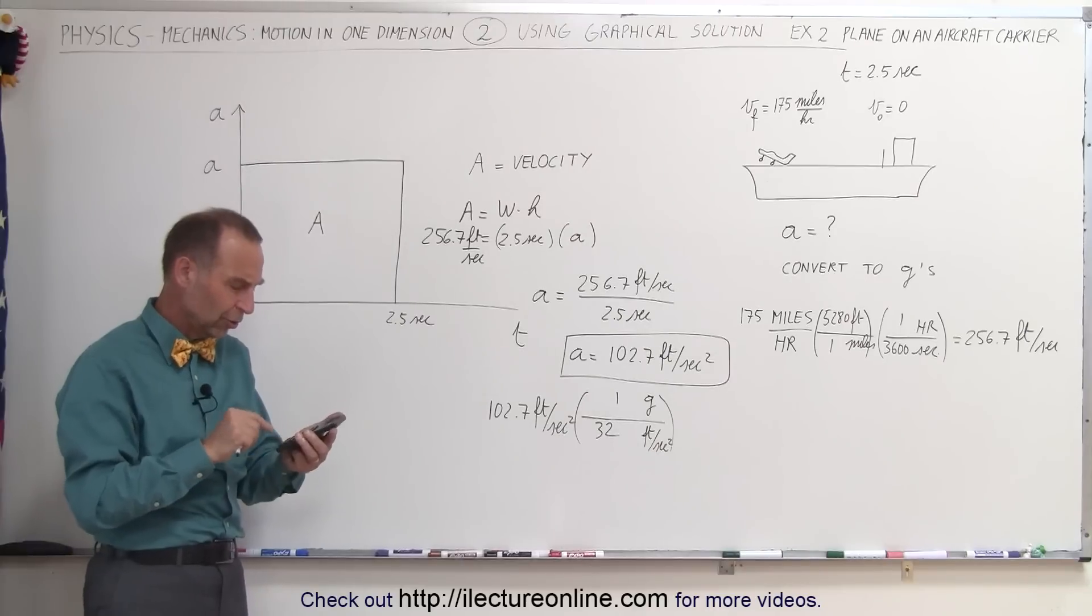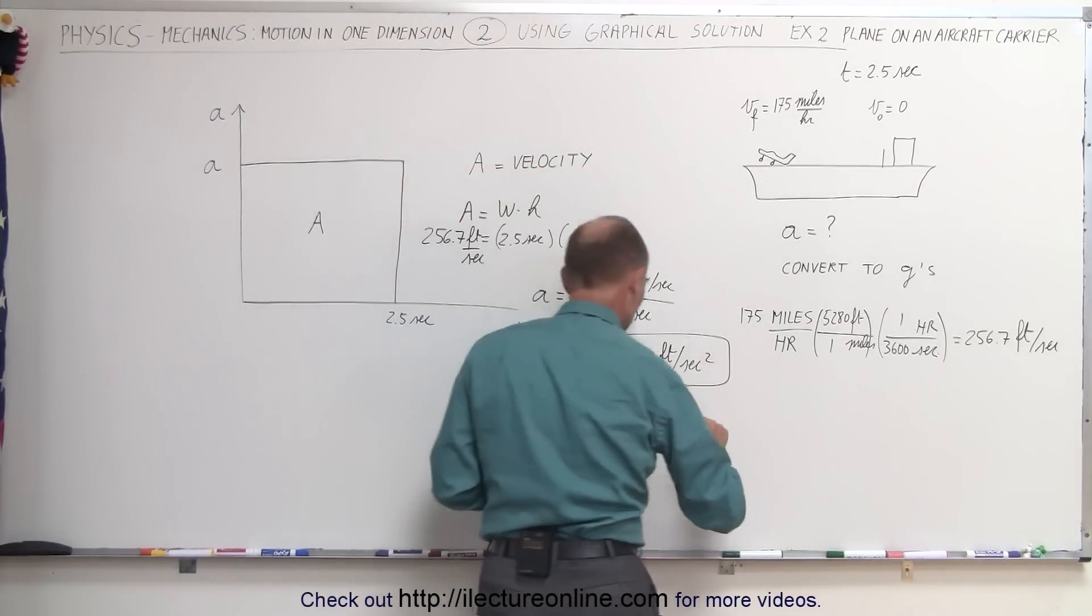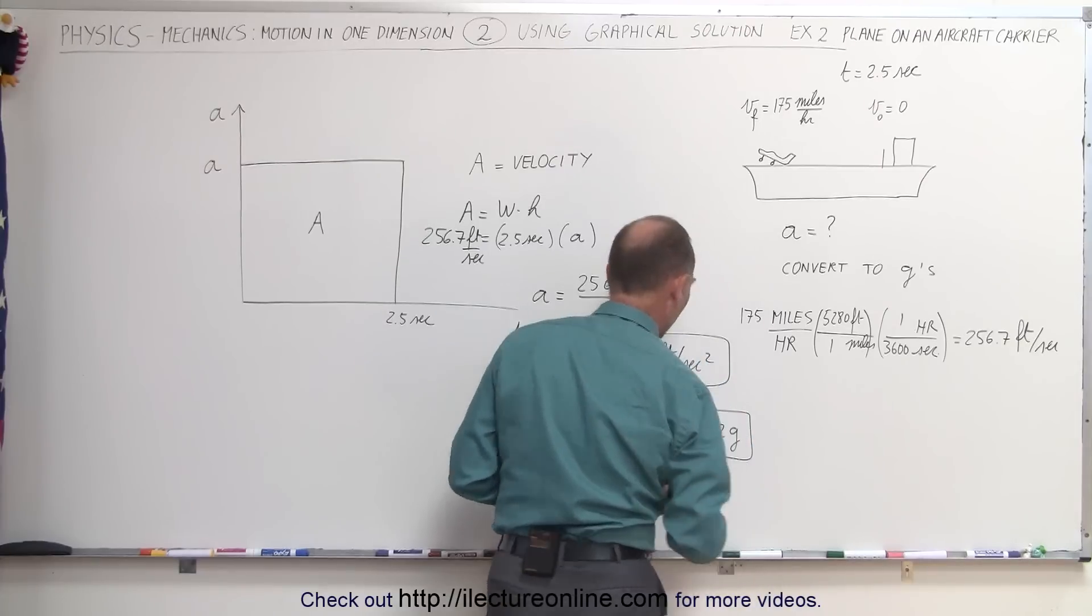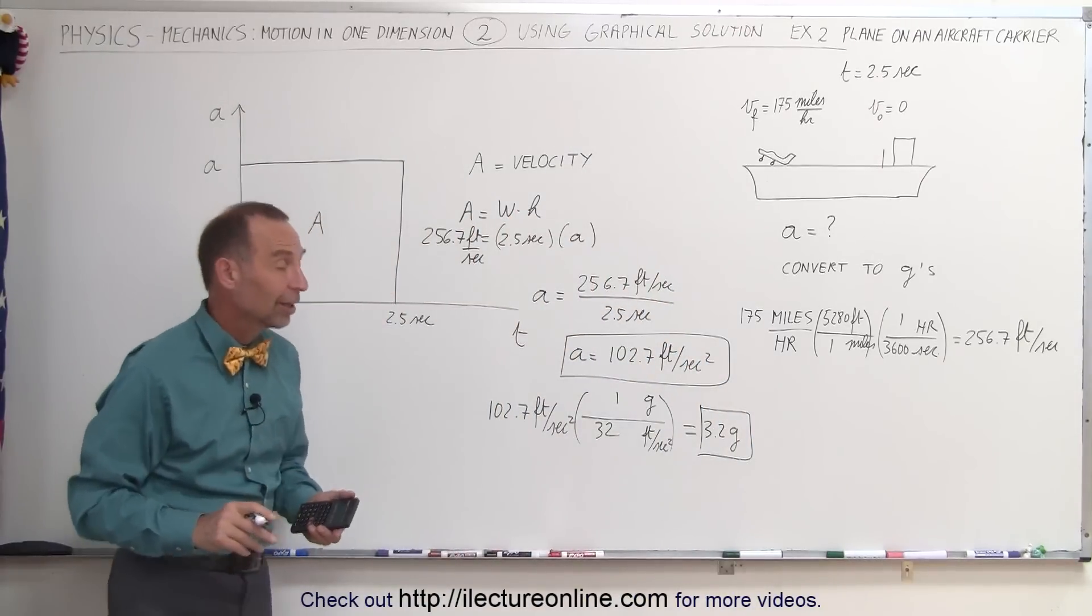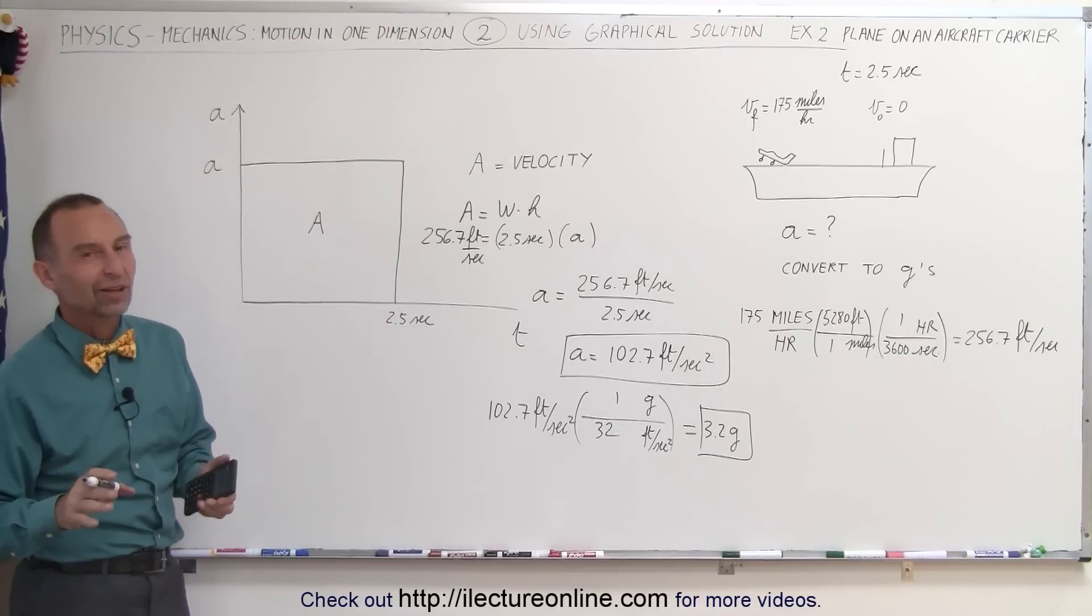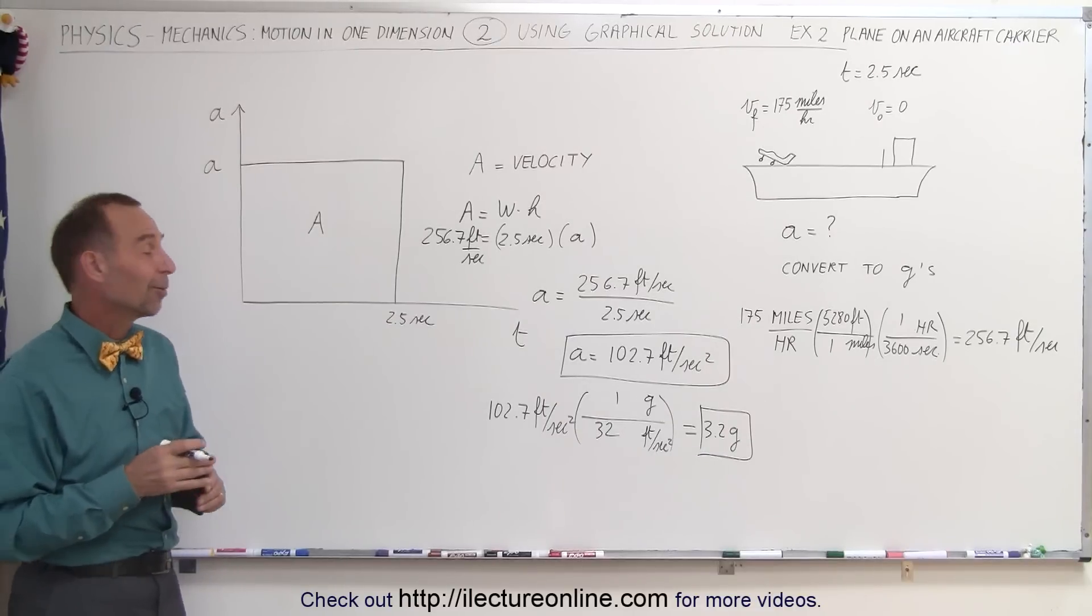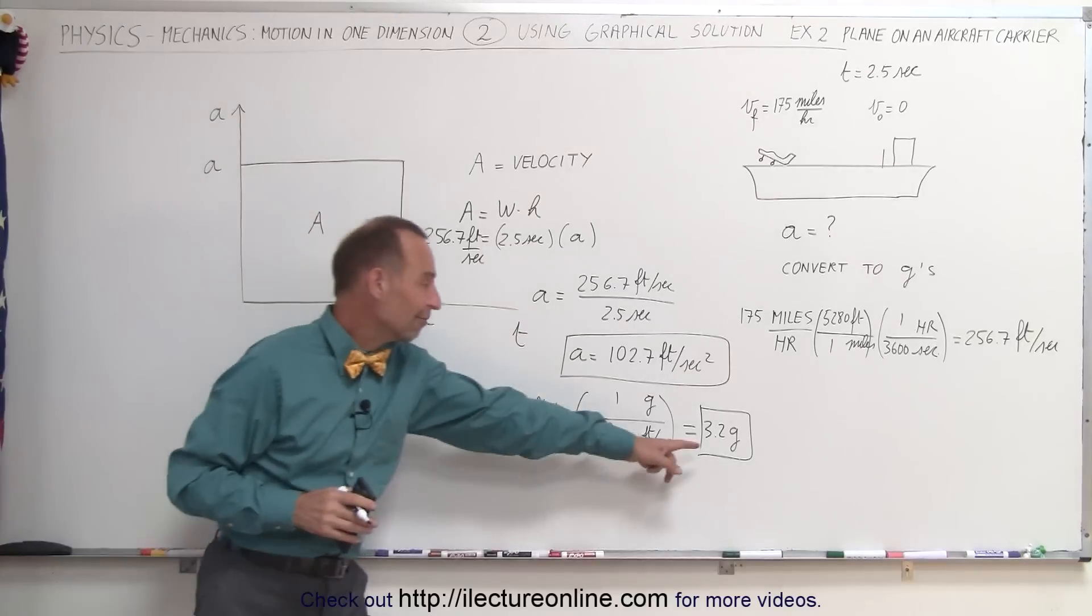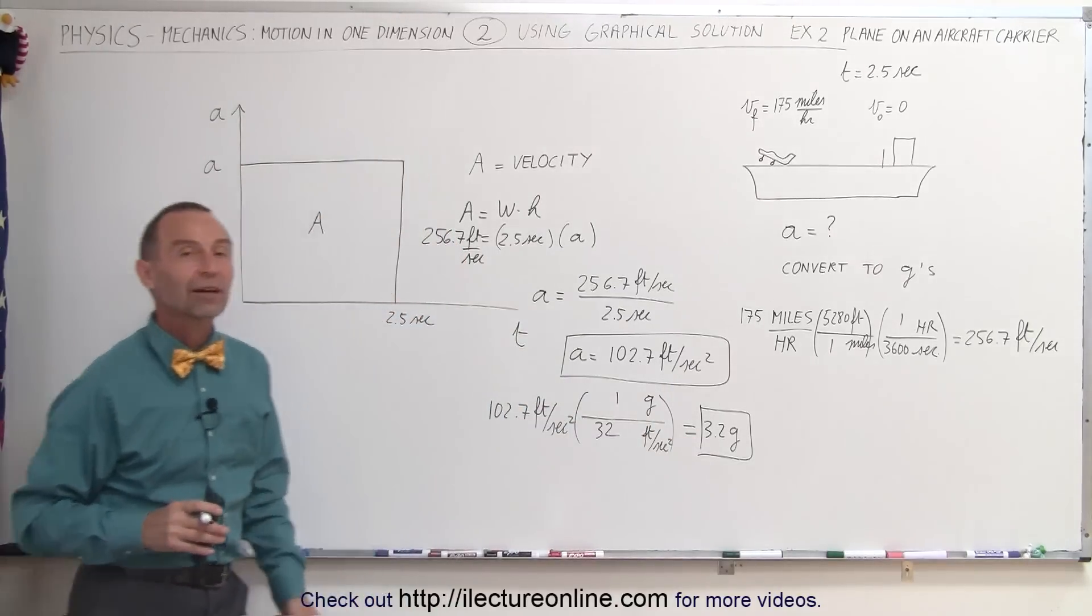So we take that, divide by 32, and we get 3.2 G's. Which means that when a pilot takes off from an aircraft carrier, that pilot experiences 3.2 G's, which is faster than most of the amusement rides in the amusement parks. That would be a faster acceleration coming off the deck of an aircraft carrier.